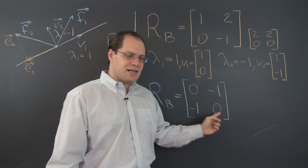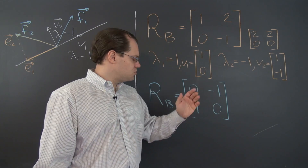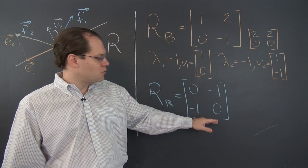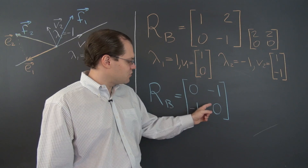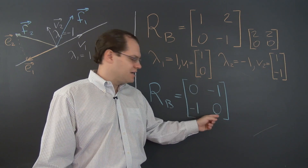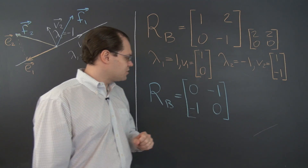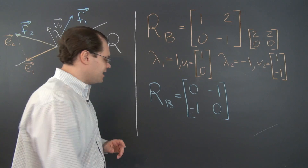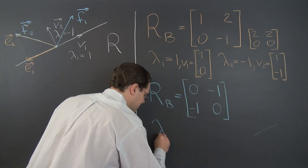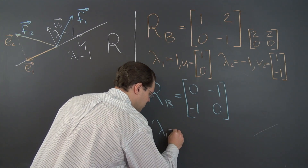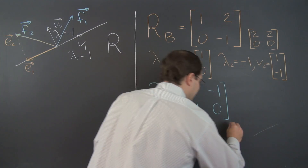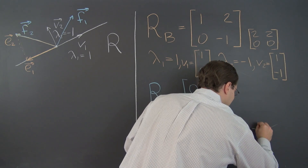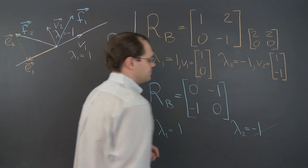Of course it has the same eigenvalues. Even if we didn't know what they were, we could have guessed them from the trace of 0 and the determinant of negative 1. So the eigenvalues are the same: lambda 1 equals 1 and lambda 2 equals negative 1.